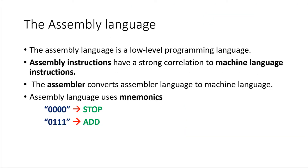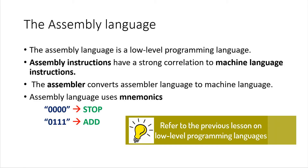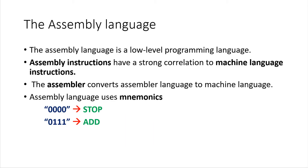So what is an assembly language? Just like machine language or machine code, assembly language is a low-level programming language, with machine language being more low-level than assembly language. This means that just like machine language instructions, assembly language instructions have a direct connection with the processor of a computer.